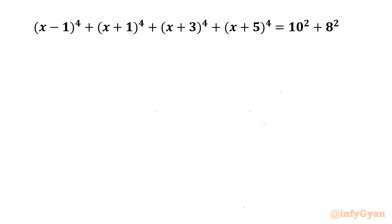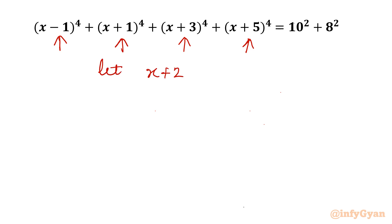Let's get started with our substitution. If you notice the values inside the brackets are −1, +1, +3, +5. The middle point if you search will be 2. So I will consider our substitution x + 2 = t.